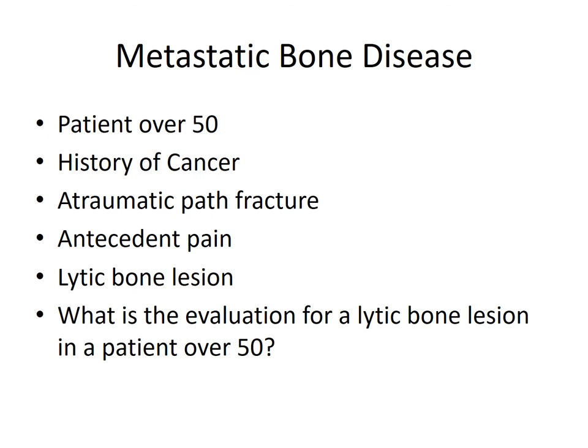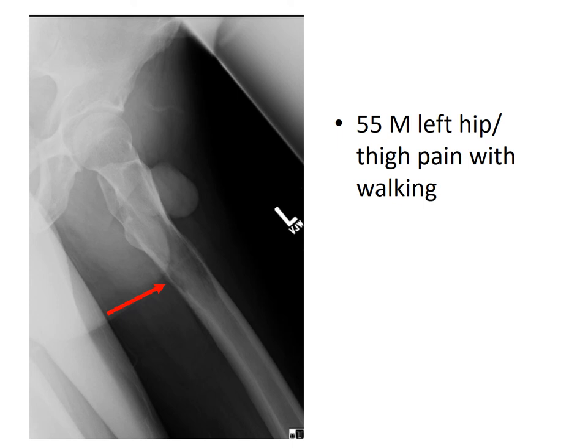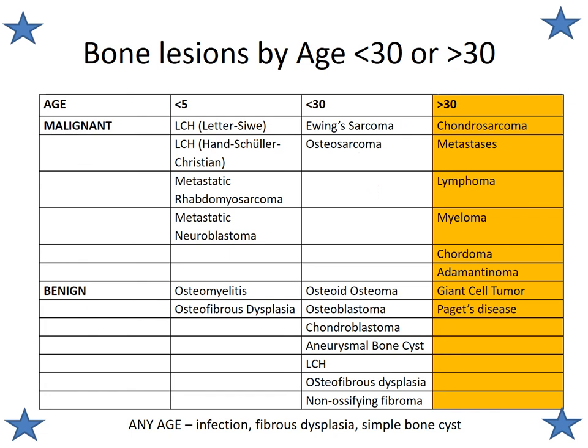Consideration should be given for the evaluation of a lytic bone lesion in a patient over 50. Here's an example: a 55-year-old male who presented with left hip and thigh pain when weight bearing. The arrow shows a subtrochanteric femoral lesion that is lytic in nature, destroying the cortex, further seen on the lateral view where there is significant anterior and posterior cortical destruction.